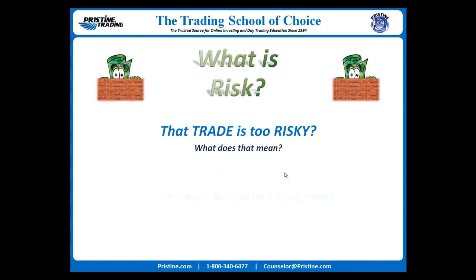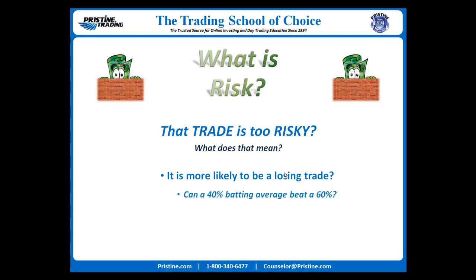Perhaps it means that the trade is more likely to stop out or be a losing trade, and therefore it's riskier. But here's the question: can a trader with a 40% batting average be more profitable than a trader with a 60% batting average? The answer is absolutely yes. So how can that make a trade riskier if it makes more money over time?